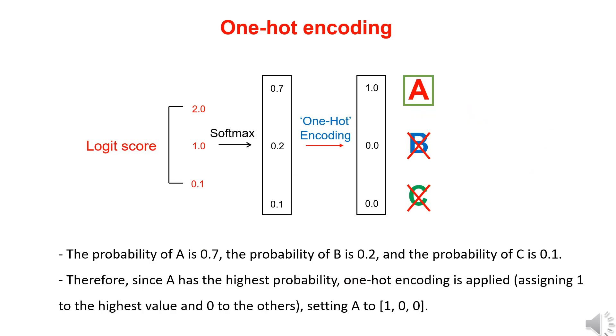In other words, based on the logit scores, when we calculate the probabilities through softmax, the probability for A, B, and C is 0.7, 0.2, and 0.1, respectively.